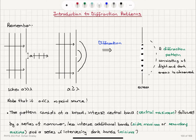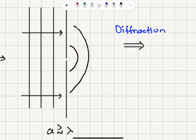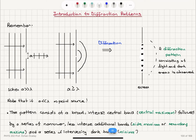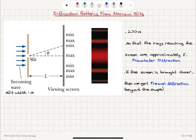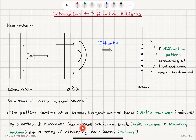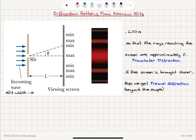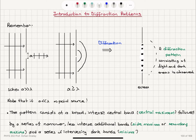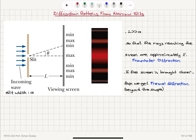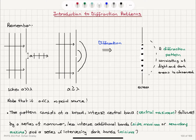In that case, it will be difficult to observe a diffraction pattern, because we need several points in the slit to produce spherical waves as described by Huygens. The pattern consists of a broad, intense central band — the central maximum — followed by a series of narrower, less intense additional bands called side maxima or secondary maxima. The intensity and width of these maxima decrease as we move away from the center, and there are intervening dark bands called minima.